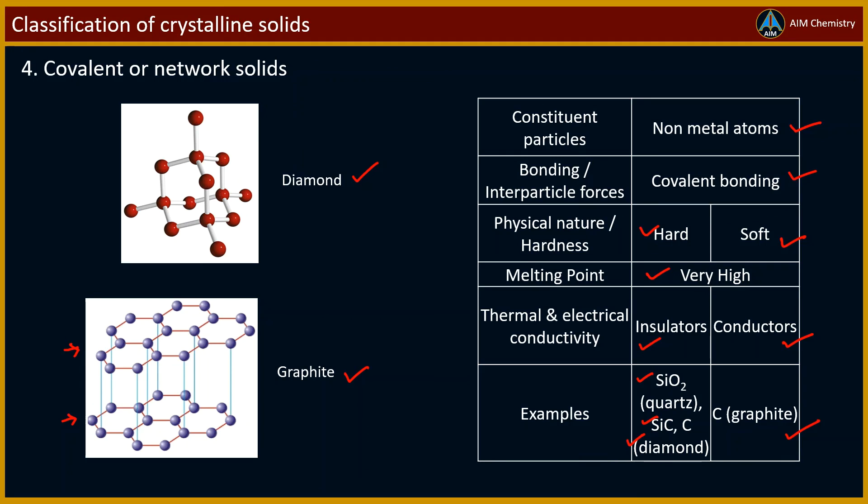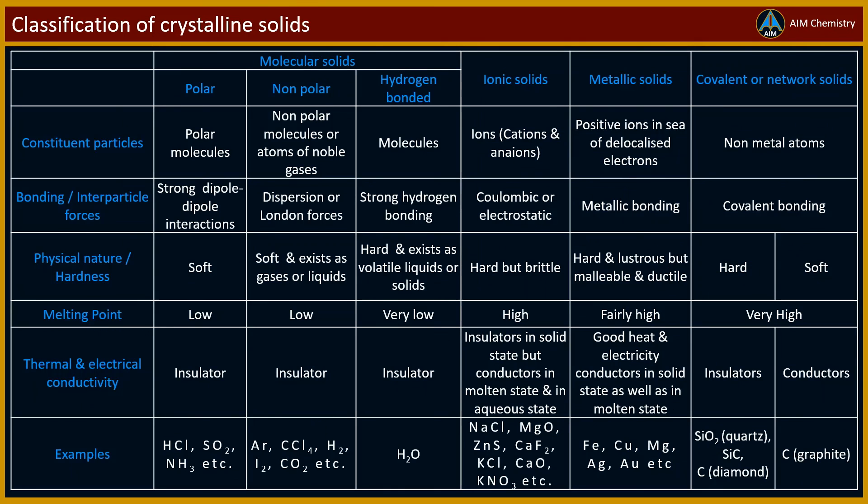Different layers can slide one over the other. This makes graphite a soft solid and a good solid lubricant. This is the one view of classification of crystalline solids.